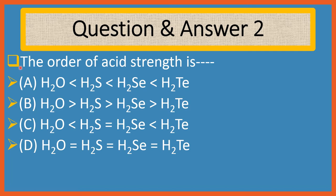Question 2. The order of acidity is. Choices are: A. H2O less than H2S less than H2Se less than H2Te.